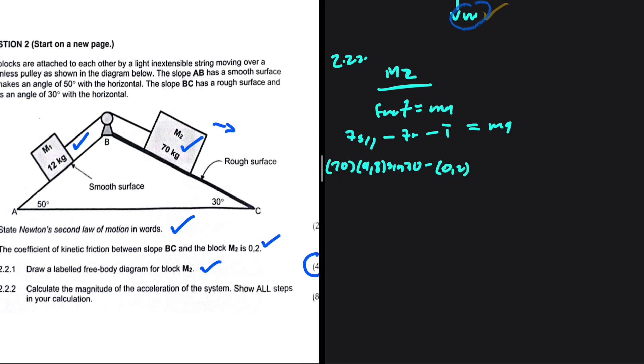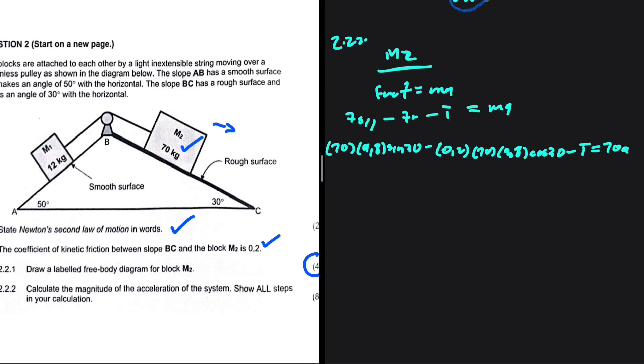The normal force is Mg cos θ. So that will be 70 multiplied by 9.8 multiplied by cos 30° minus the tension being equals to 70 multiplied by a. We're going to have 224.1813 minus the tension force being equals to 70a.